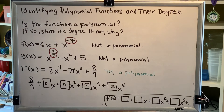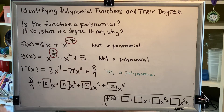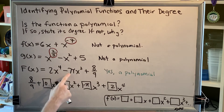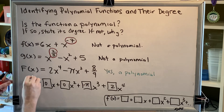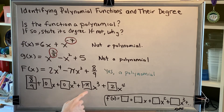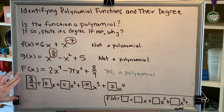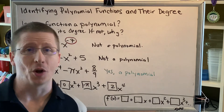All of my exponents are counting numbers — 3 and 4 are both counting numbers. All of my coefficients are real numbers: 8 ninths is a real number, 0 is a real number, negative pi is a real number, 2 is a real number. Therefore, this meets the definition, and capital F of x is a polynomial.